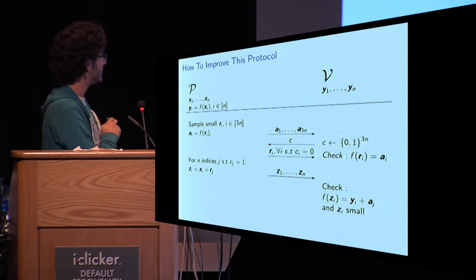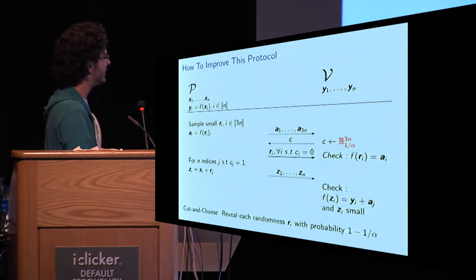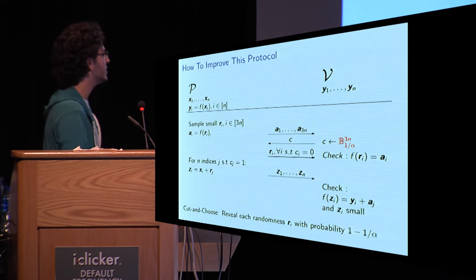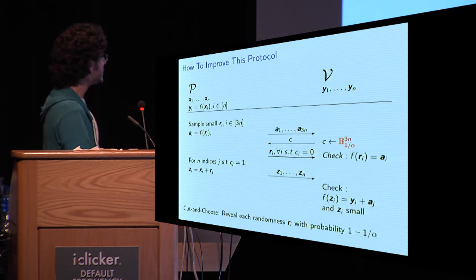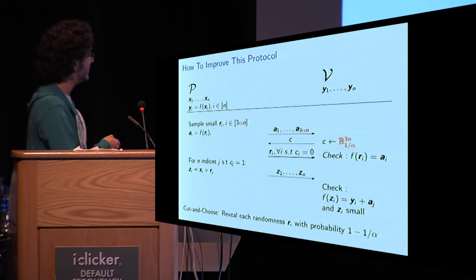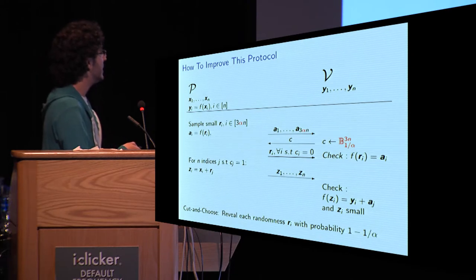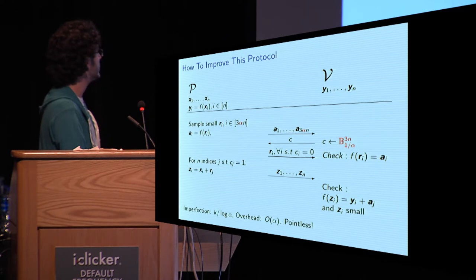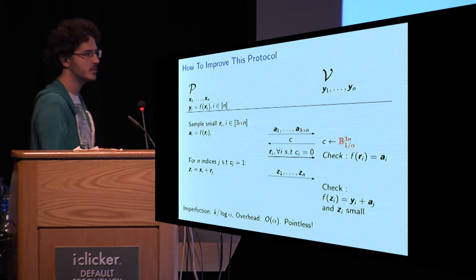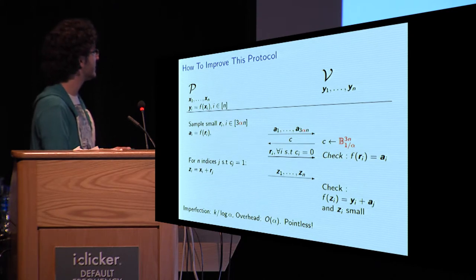So, we will do exactly this on this protocol. Instead of taking c from 0, 1 to the 3n, we take c to be a Bernoulli variable with parameter 1 over alpha, which is a fancy way of saying we reveal each randomness with probability 1 minus 1 over alpha. This introduces an issue because, for the next step, we need n randomnesses to not have been revealed. And, clearly, if we reveal too many of them, this will not work anymore. So, we have to increase the number of randomnesses we take in the beginning. Now, we have achieved the soundness that we asked to get, which is k divided by log alpha. But, we have introduced an overhead linear in alpha. So, this protocol, as it stands, is completely useless. It's not more efficient than the previous one in any way. So, we will patch things up.